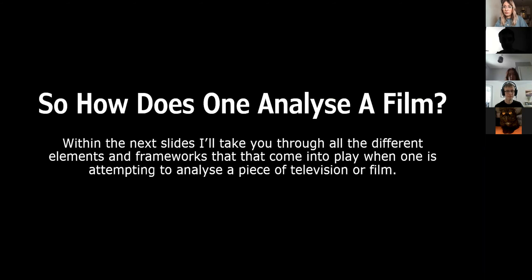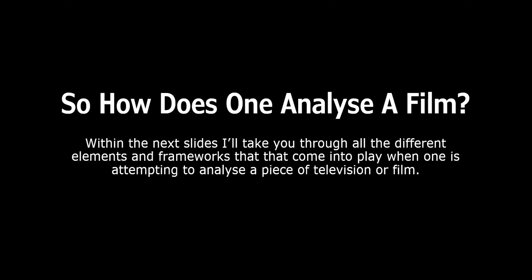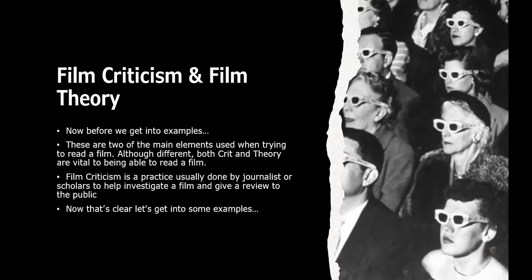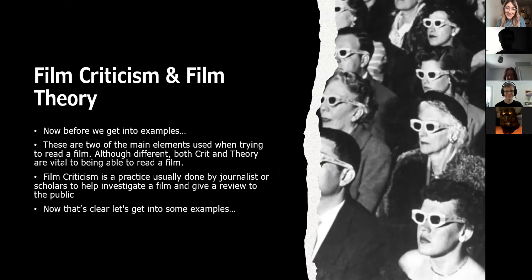So, how to analyse a film — on the next slide I'm going to go through a few different elements and frameworks that come into play when you want to understand how to analyse a film. Now, before we get into some examples, I just want to say how similar film criticism and film theory are. There are two main elements used when trying to read a film — although different, both criticism and theory are vital. Criticism is a practice usually done by journalists or scholars to help investigate a film and give it a review for the public.